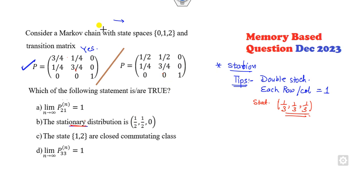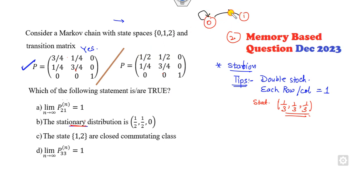Then how can you find the stationary distribution for this matrix? If I draw the state diagram: state 0 goes to 0, 0 goes to 1, 1 goes to 0, 1 goes to 1, and that is only here. So clearly, is it irreducible? Yes, this is an irreducible matrix.